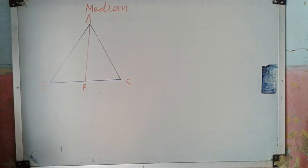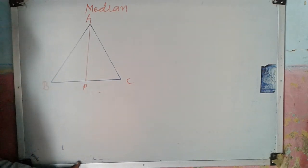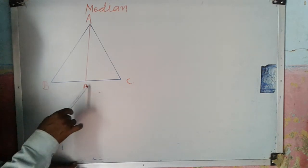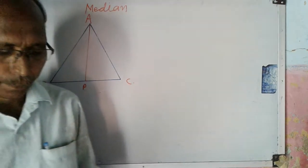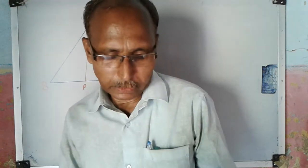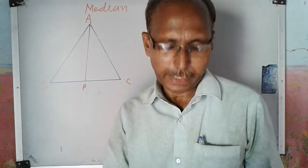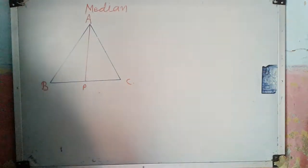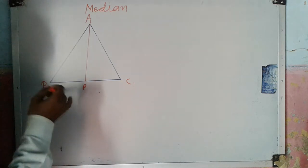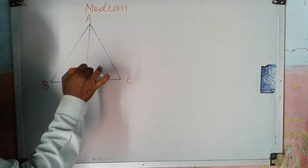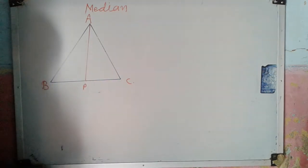That means the segment joining the vertex of the triangle to the midpoint of the side opposite to the vertex is called the median of triangle. Now we can draw two more medians, because this triangle has three sides. So on each side we can draw one median.